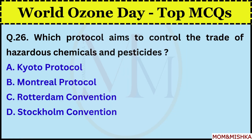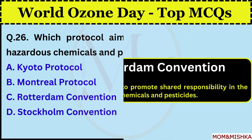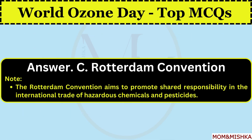Which protocol aims to control the trade of hazardous chemicals and pesticides? Rotterdam Convention. Option C. This Convention aims to promote shared responsibility in the international trade of hazardous chemicals and pesticides.